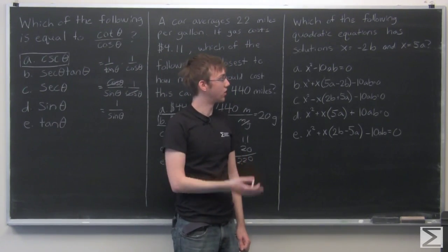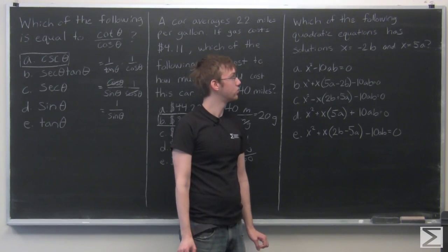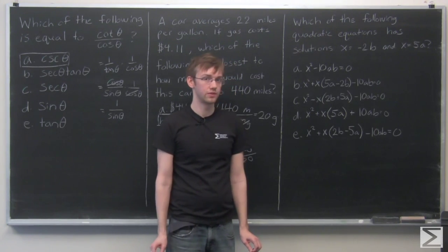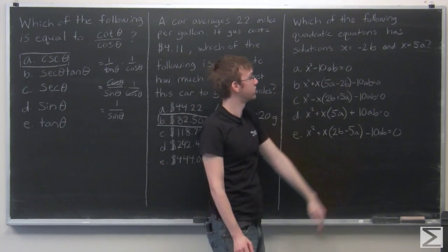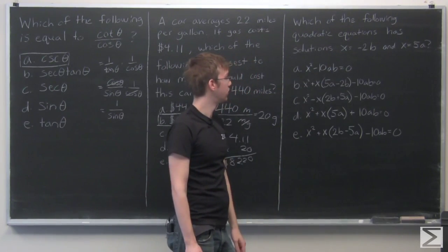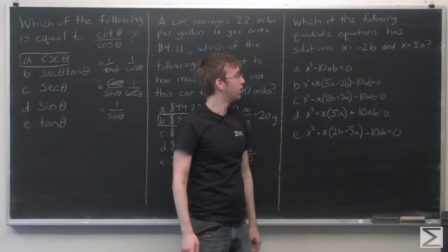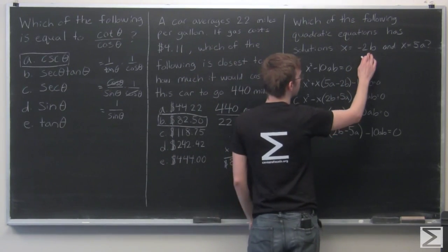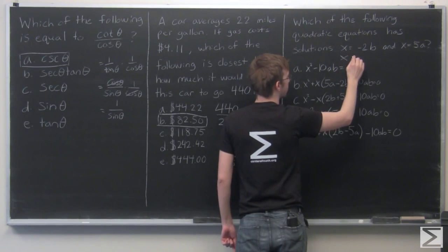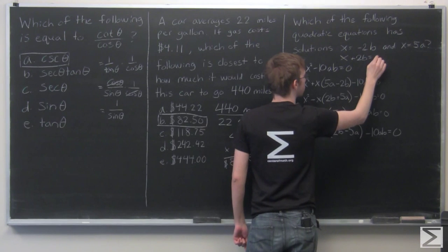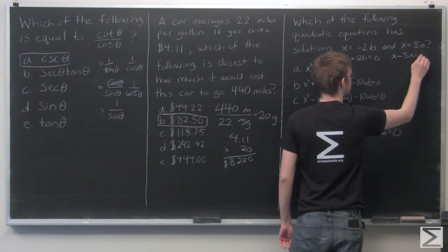Finally, we have a quadratic equations question. Which of the following quadratic equations has solutions x equals minus 2B and x equals 5A? So for a quadratic equation to have these as the solutions, we know when these values are put in for x, the whole equation is going to equal 0. So if we take these equations and move the 2B over to this side, we get x plus 2B equals 0. And x minus 5A equals 0.